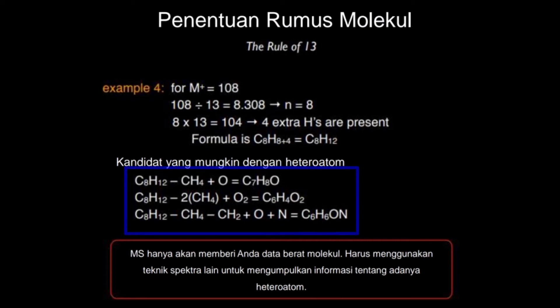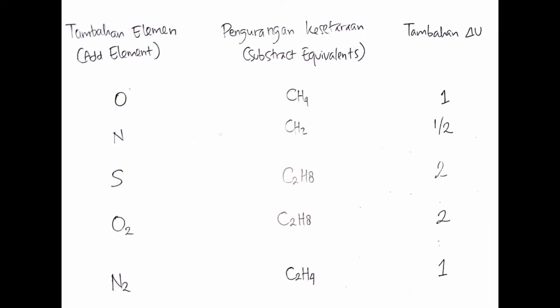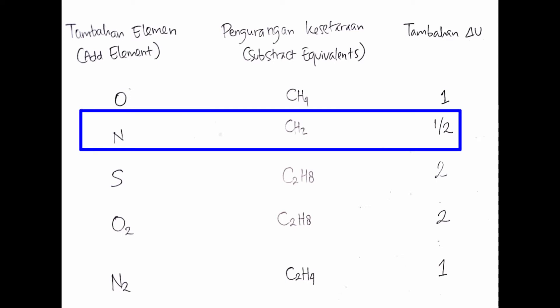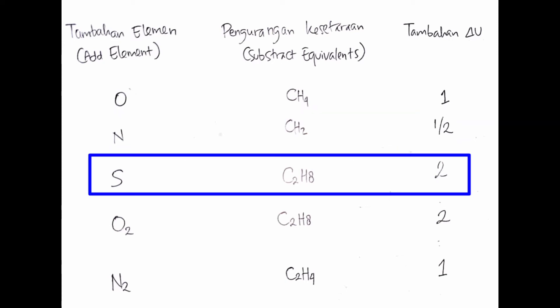Apabila ada tambahan elemen, misalnya oksigen, rumus molekulnya dikurangi CH4 dan delta U-nya ditambah 1. Untuk nitrogen, rumus molekulnya dikurangi CH2 dan delta U-nya ditambah setengah. Untuk sulfur, rumus molekulnya dikurangi C2H8 dan delta U-nya ditambah 2. Begitu pula untuk oksigen dan nitrogen yang jumlahnya 2 caranya sama.